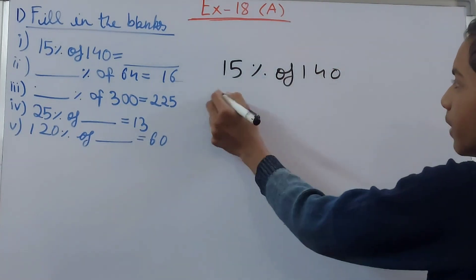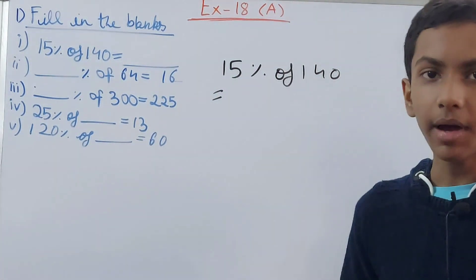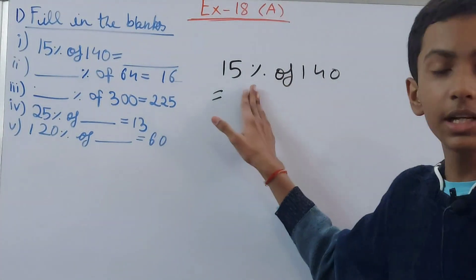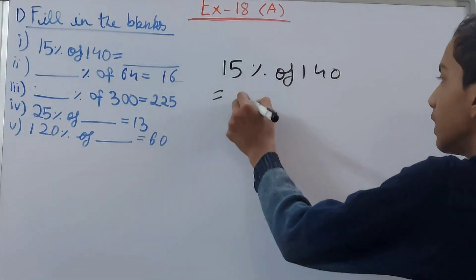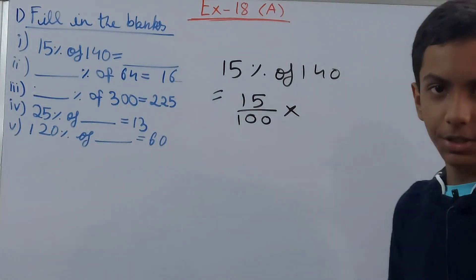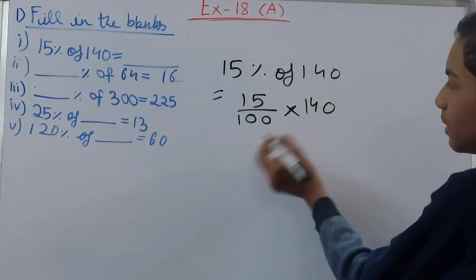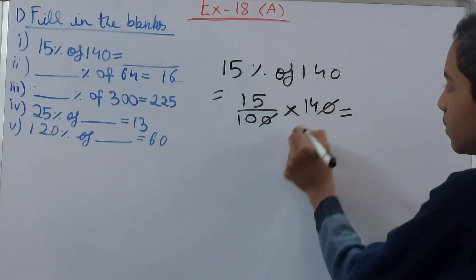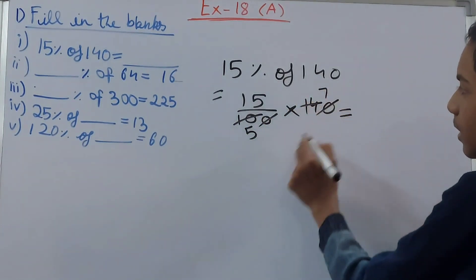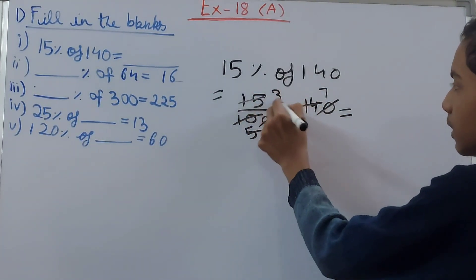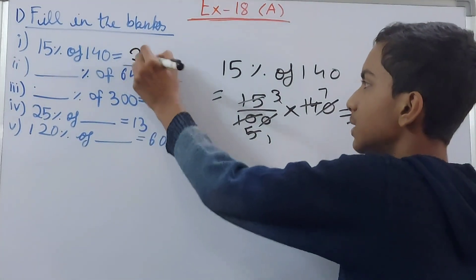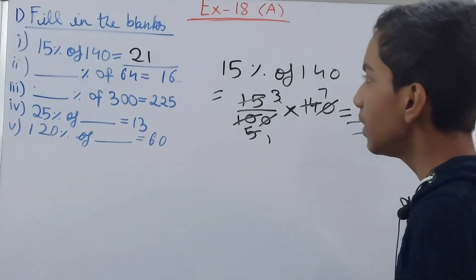First, we have 15% of 140. Convert 15% into a fraction: 15 upon 100. 'Of' is always replaced by multiplication sign. So we get 15/100 × 140. Cancel the zeros, then 10 and 14 become 5 and 7, giving 1 and 3. So 3 × 7 = 21. Therefore 15% of 140 is 21.